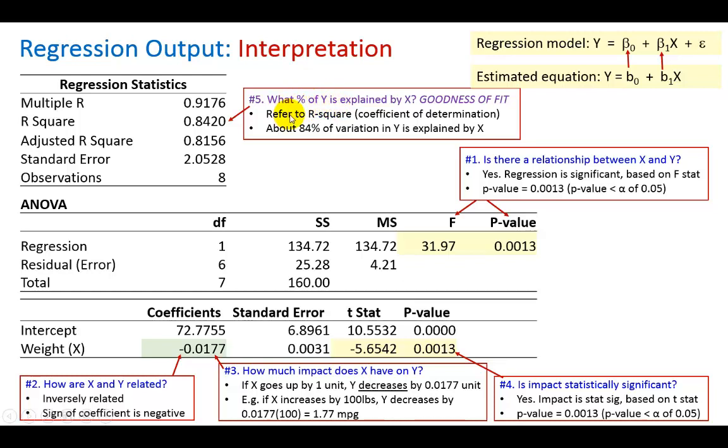The answer is based on the coefficient of determination R square which comes out to be 0.842. Meaning that about 84% of the variation of Y is explained by X.